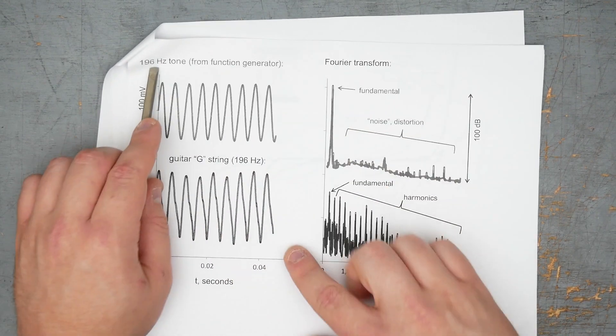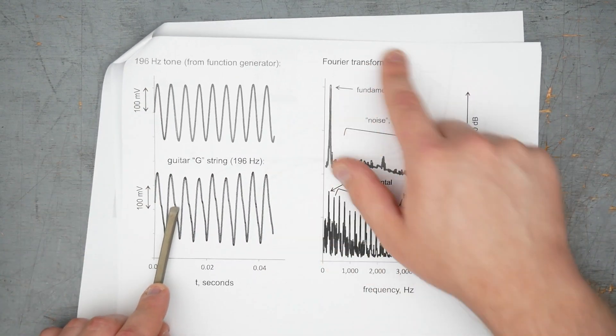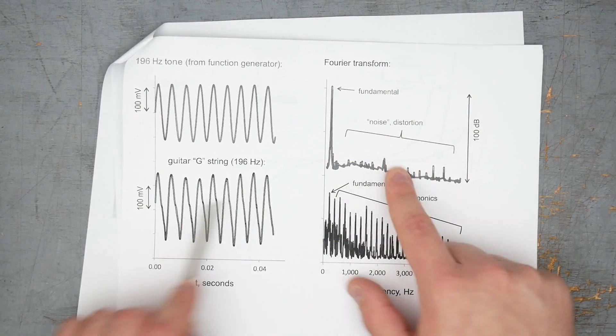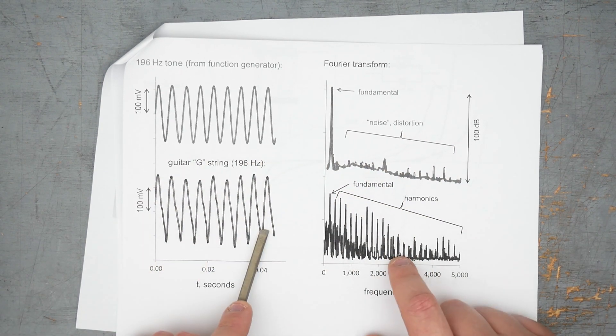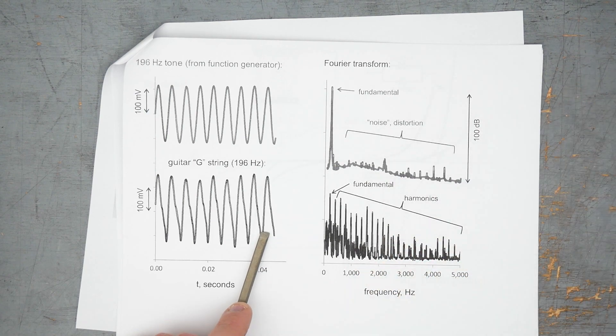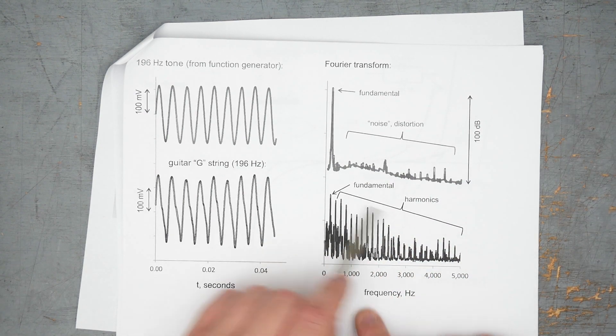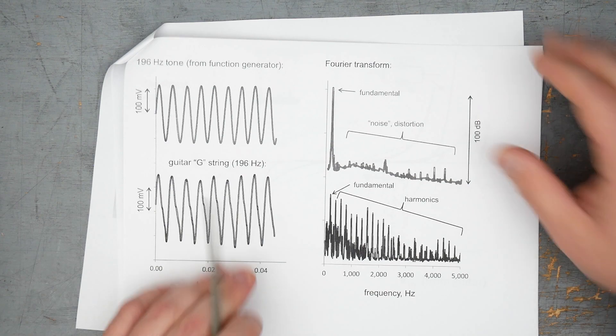Looks like a function generator, guitar string, and then some Fourier transforms of the fundamental, the noise distortion. When you put it through the distortion, or the clipping, these Nanolog Devices, you get all this harmonic content, which is what clipping is.